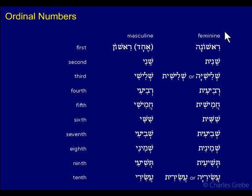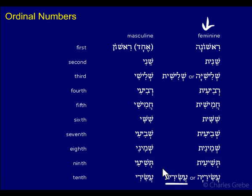One other thing: the feminine ordinals — not the masculine, but the feminine ones — can be used to express fractions. For example, in Exodus 16 verse 36 it says 'an omer is a tenth part of an ephah,' and the word used there is Asirit — written defectively without the yud, but Asirit means 'a tenth.' So there you have the ordinals.